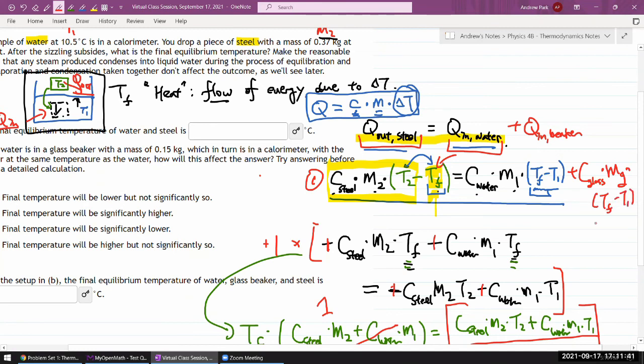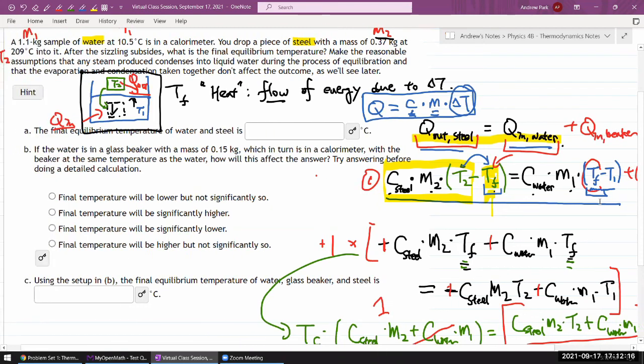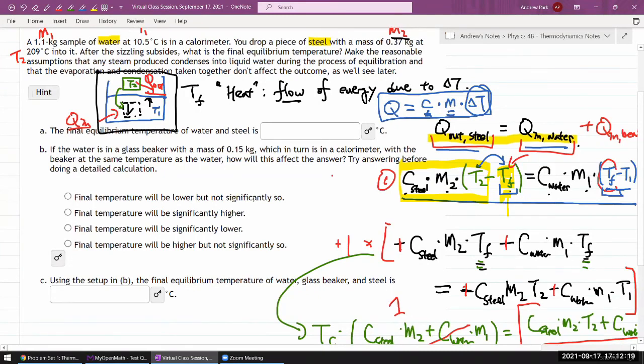Plus C glass times mass of glass times T final minus T1. When you go through the process, T final is going to be smaller. But it's a kind of number sense thing - when you look at how large the specific heat capacity of water times the mass of water is and compare it to the specific heat capacity of glass, which is a lot smaller, times the mass of glass, which is also smaller than amount of water, this additional term doesn't contribute a lot. Contributes a little bit, but that's what I mean - lower but not significantly so.